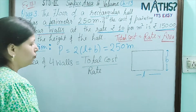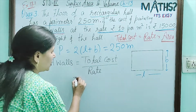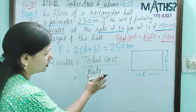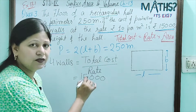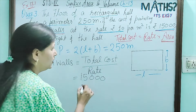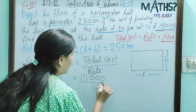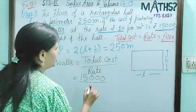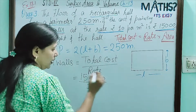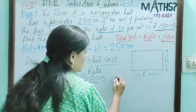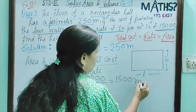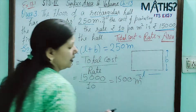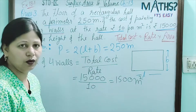Now, fill in the values after getting this formula. Total cost is 15,000 and rate is rupees 10. So, area of four walls = 15,000 ÷ 10 = 1,500 metre square.